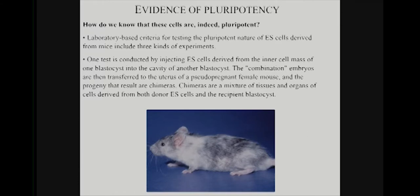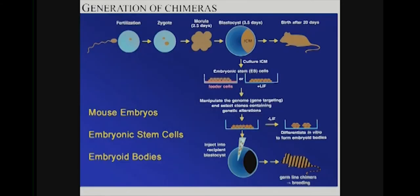That combined embryo is then transferred into the uterus of an appropriately prepared female mouse. The progeny that result are chimeras — there's the host and then there's the cells you added. All you have to do is go through ectoderm, mesoderm, and endoderm and see that the cells you injected do indeed contribute to all those tissues. That's really probably the gold standard, though it gets done less often — a lot of people have quicker in vitro tests.